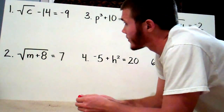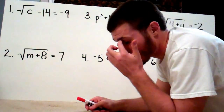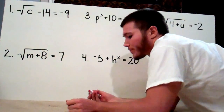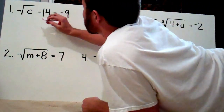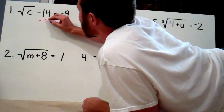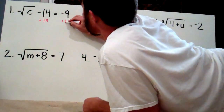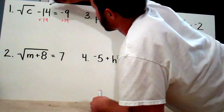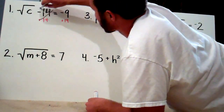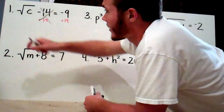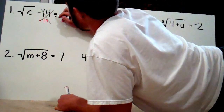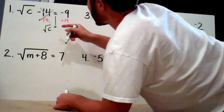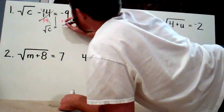First, I've got the square root of C minus 14 equals negative 9. The first thing we're going to want to do is get rid of that minus 14. So I'm going to do the inverse of minus 14, which is plus 14, and I'm going to do that on both sides. Those cancel out. Now all I have left is the square root of C equals negative 9 plus 14, which gives me positive 5.